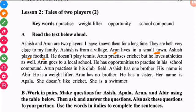Ashish plays football; he doesn't play tennis. Oroon practices cricket, but he loves athletics as well. Oroon goes to a local school and has opportunities to practice in his school compound. Oroon also practices in his club field.